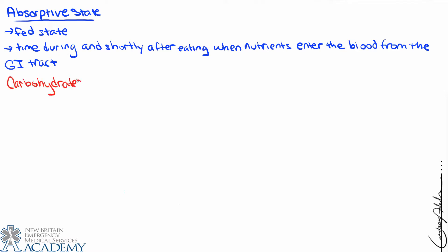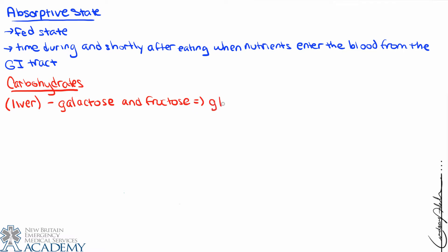Starting with carbohydrates: carbohydrates have to be broken down to monosaccharide level in order to be absorbed into the intestinal mucosa and transferred to capillaries. The monosaccharides available are glucose, fructose, and galactose — all three can be absorbed through the intestinal mucosa.